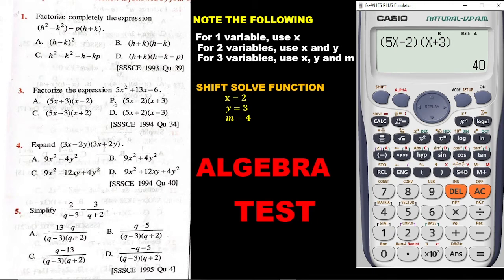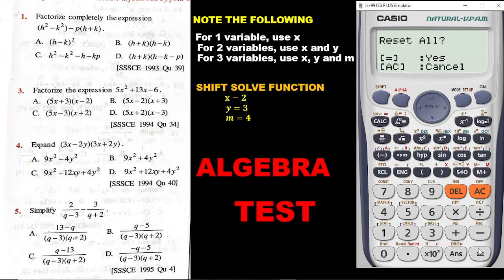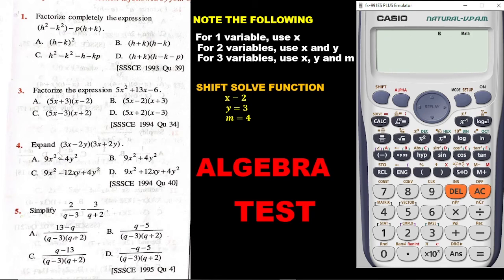We are done with that one. Now let's go to the next question — quickly, I have to clear the calculator to ensure I am getting correct values. The next question says: expand (3X minus 2Y)(3X plus 2Y). Thankfully, we have X and Y there, so we are not going to replace anything. Enter the expression the way you see it on the calculator.